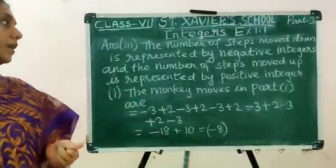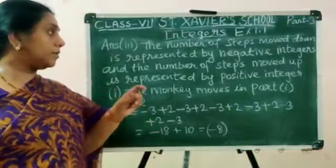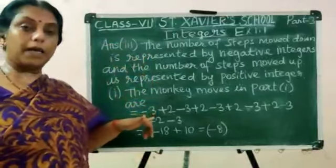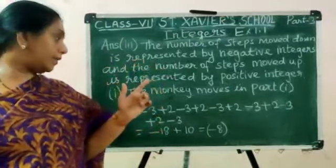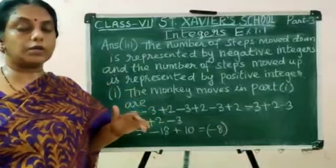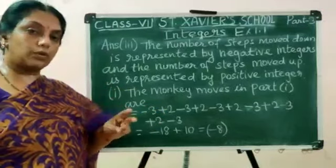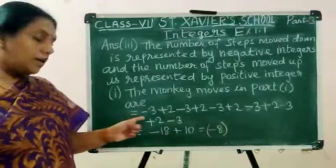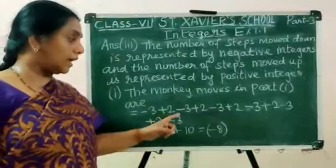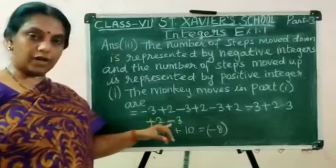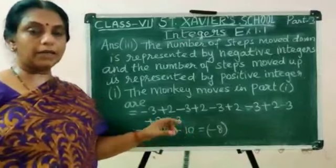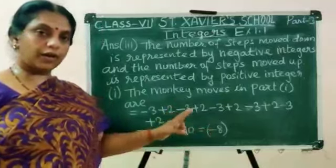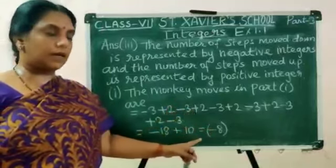The answer for the 3rd one: steps moved down are represented by negative integers. So in the 1st question, the monkey jumps 3 steps down, represented by minus 3. Steps moved up are represented by positive integers — 2 steps moved up is plus 2. It made 11 jumps, so 6 times minus 3 gives minus 18, and 5 times plus 2 gives plus 10. Minus 18 plus 10 equals minus 8.